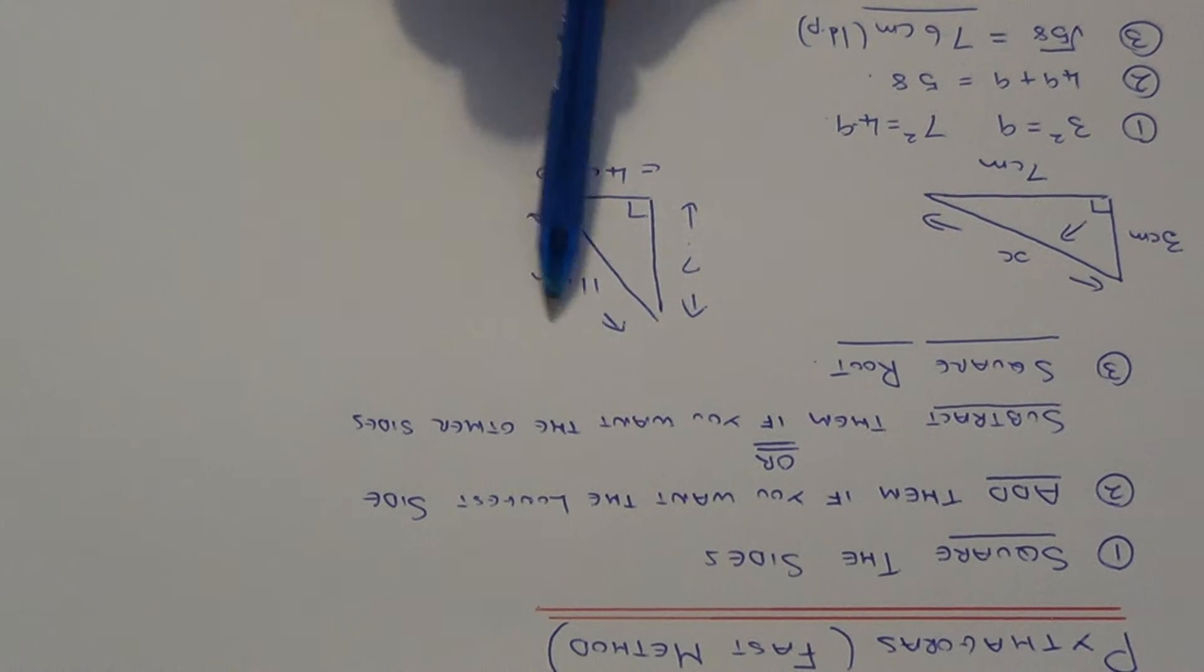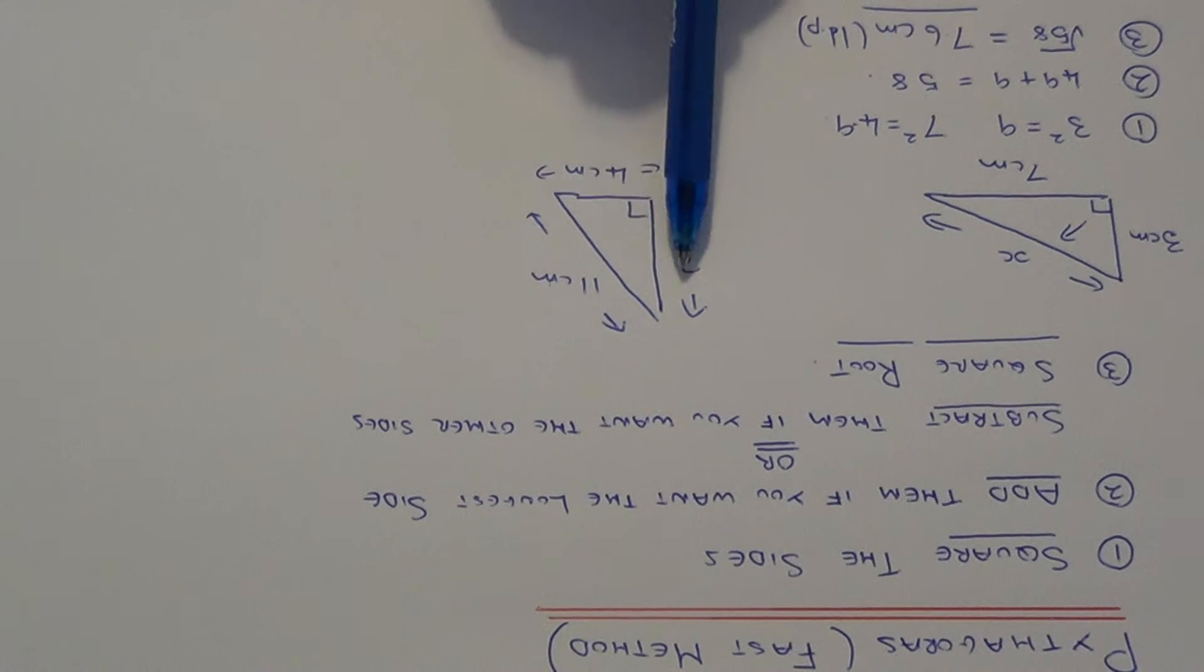So again we know we have got to use Pythagoras because you have got two sides and we need to find another side length in a right angled triangle.